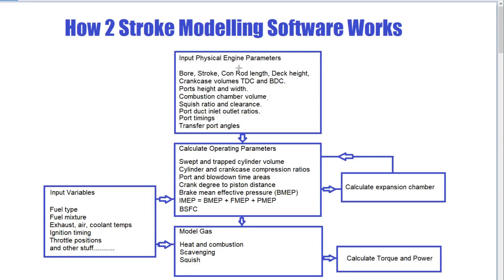The first part of the modeling software is getting the physical dimensions of the engine, and this is as important as any part of it. If you are inaccurate in making these measurements, everything else is going to be based on that inaccuracy. So you have to measure them all accurately. With this modeling software, if you're going to model the output, you have to measure all of the values.